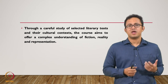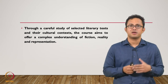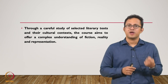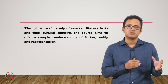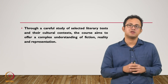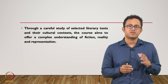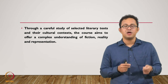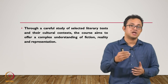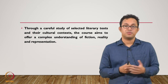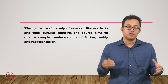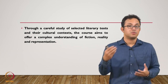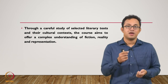Through a carefully selected series of literary texts and their cultural contexts, this course aims to offer a complex understanding of fiction, reality, and representation. The whole relationship between fiction and reality is important — fiction is not really a lie, not really a fantasy; it is a possibility. Fiction is always a production of possibilities. It combines historical reality with possibilities — what did take place, what could have taken place, and sometimes what should have taken place. All these focal points are mixed together in this very messy entanglement which is fiction: a liminal landscape between lie and reality.